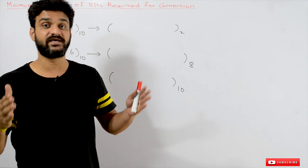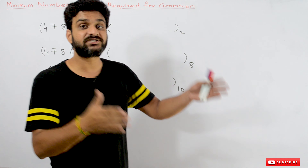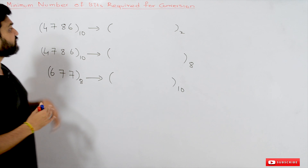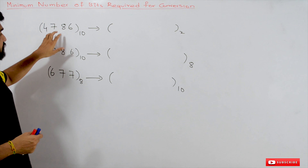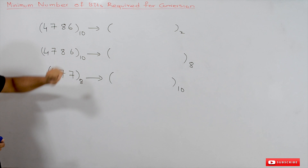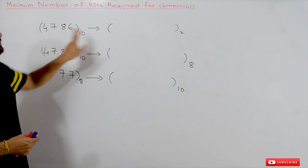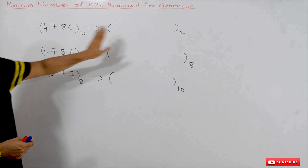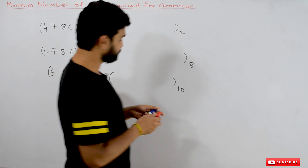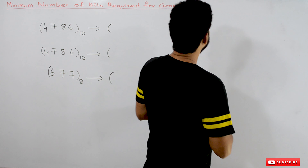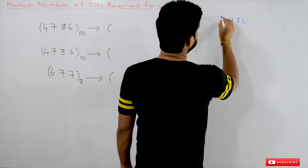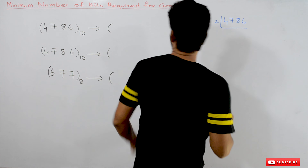However, if they ask big numbers, converting manually takes a lot of time. So it is not required for you to actually convert the number fully. There is a logic behind this conversion. Before explaining that logic, let's first convert a number manually to verify — for example, 4786 converted to binary.